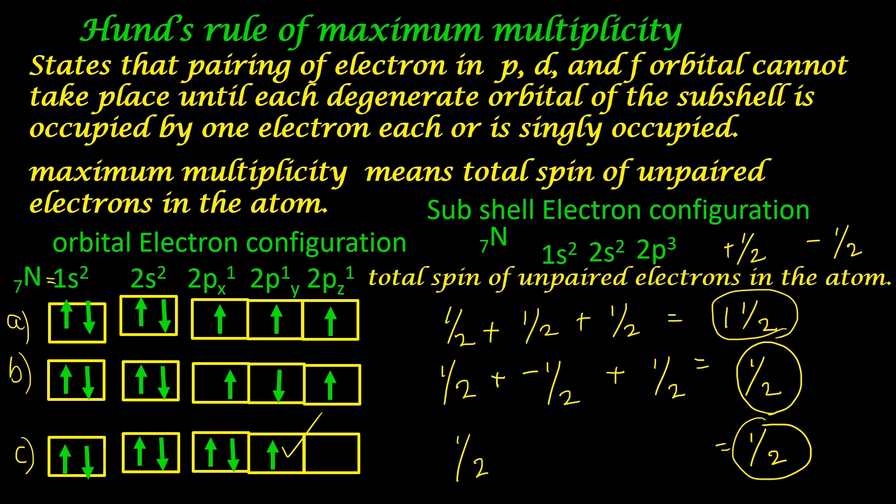So the electron should be distributed as is shown under A. The electrons occupying the three orbitals of p should be in the same direction. That is, all the three should be either in the upward direction or in the downward direction. Here we have shown them in the upward direction. I hope it is clear.